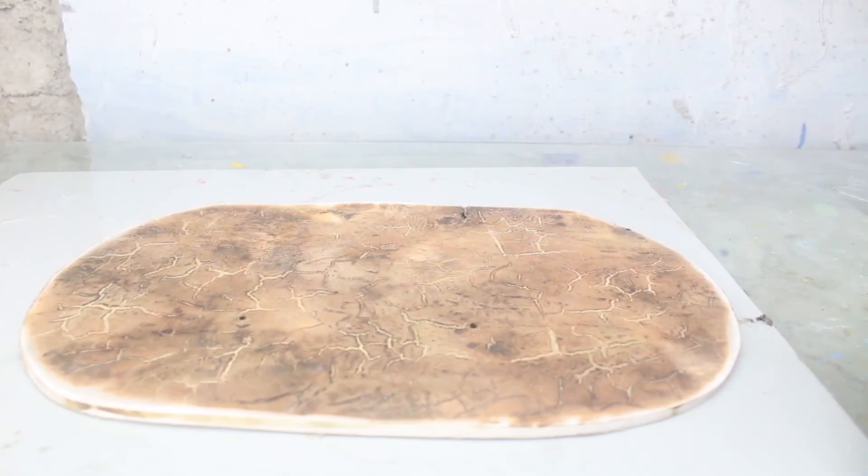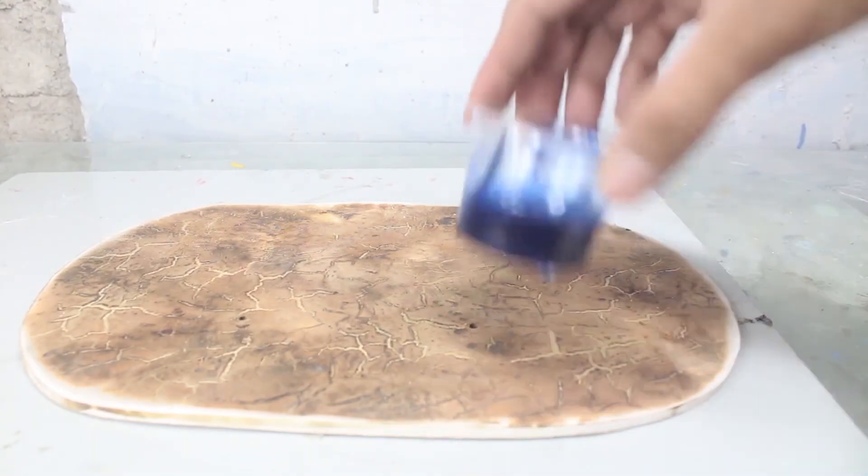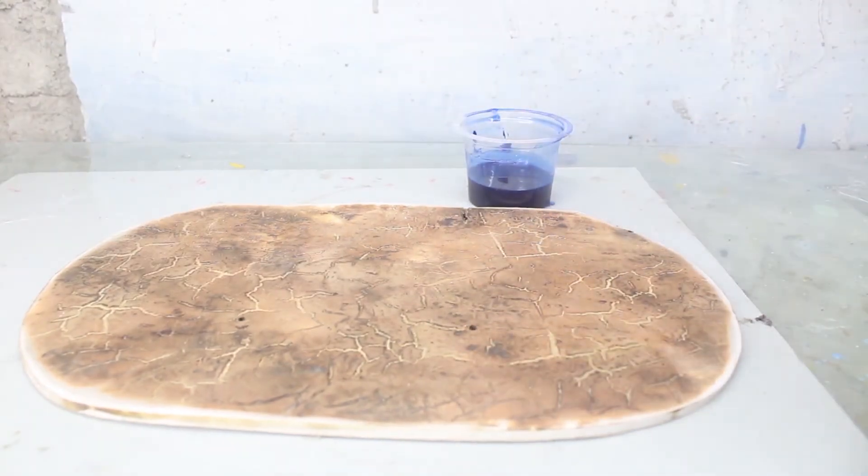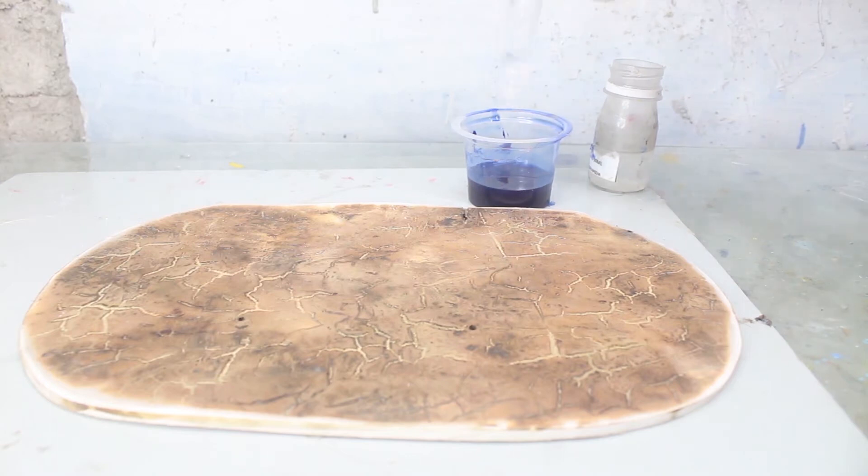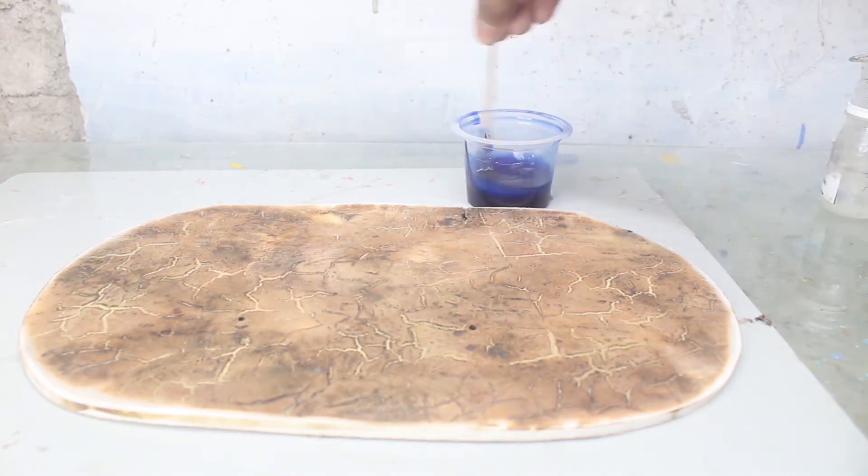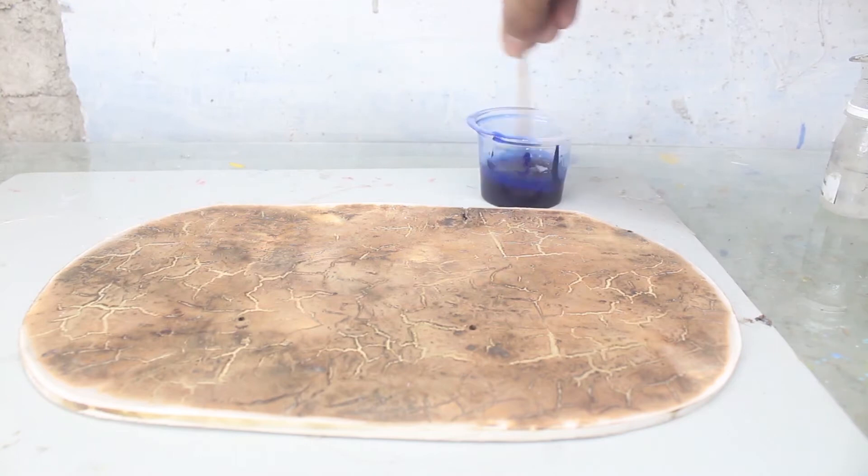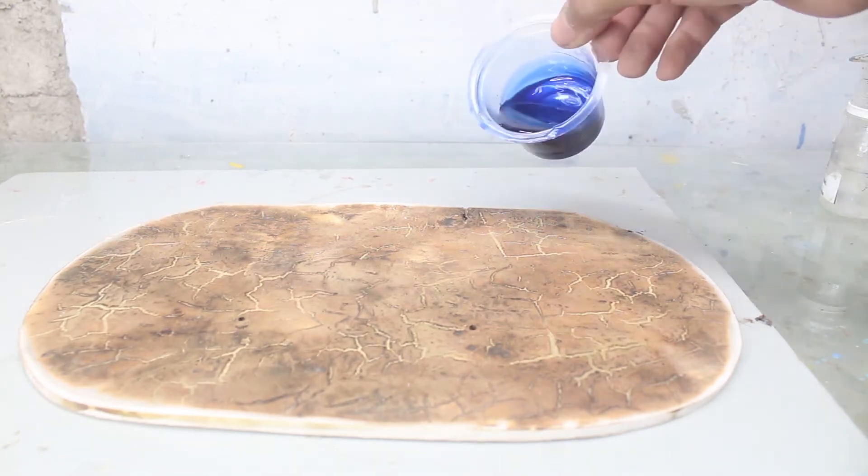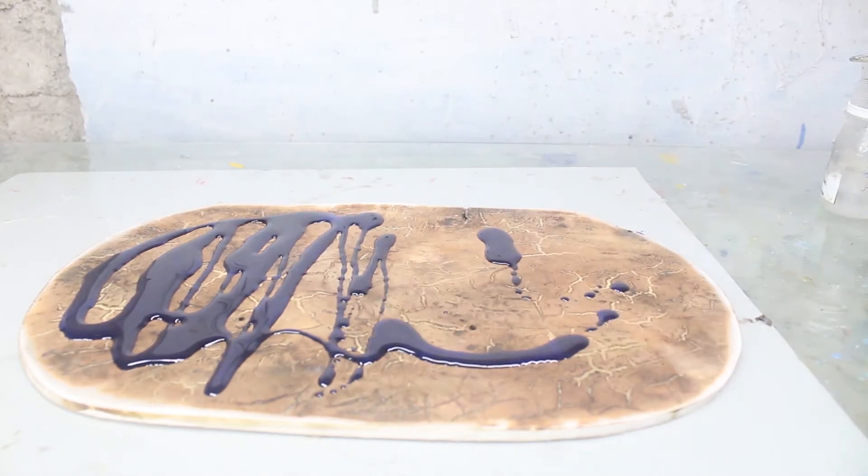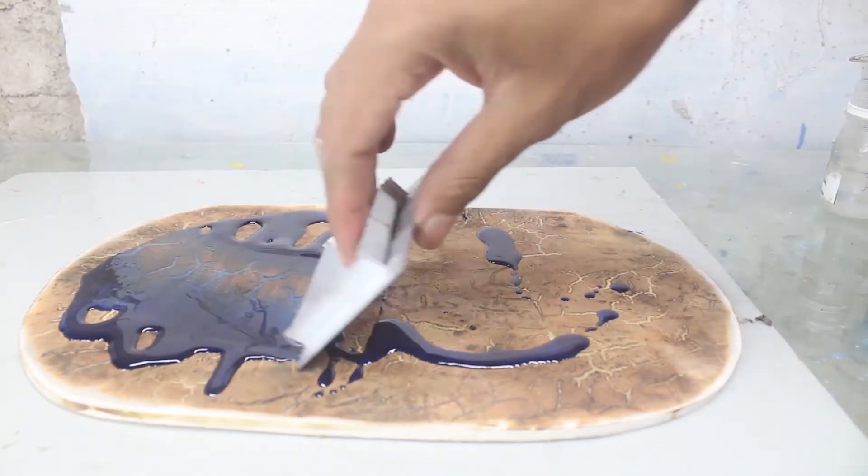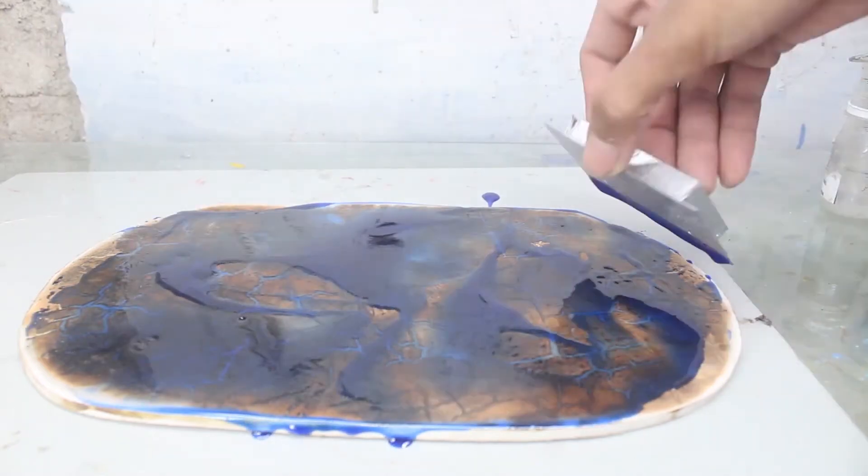Disini juga saya sudah siapkan pipa paralon yang bulat. Yang saya panaskan sampai dia merata. Lalu saya bakar untuk keluar motifnya. Dan disini saya akan tuang resin juga untuk warna biru. Saya akan ratakan dia. Saya tunggu kering.